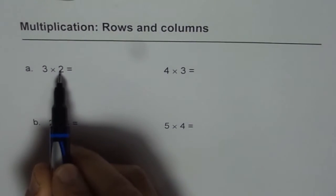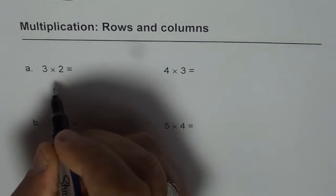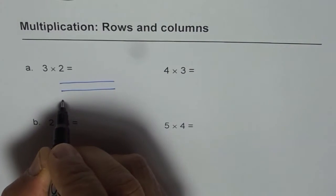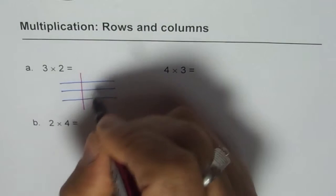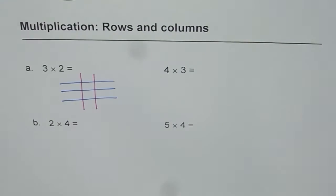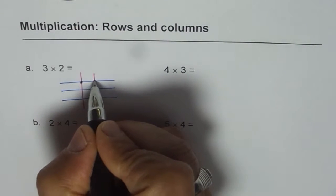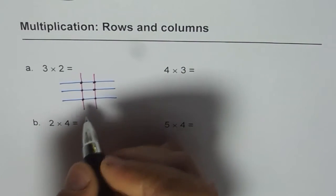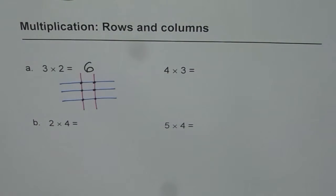Let us see how to find 3 times 2. When I say 3 times 2, I can think about 3 rows. These are my 3 rows, 1, 2 and 3, and 2 columns. These are my 2 columns. Let me count how many points they intersect. 1, 2, 3, 4, 5, 6. Therefore, 3 times 2 is 6. That is so easy.